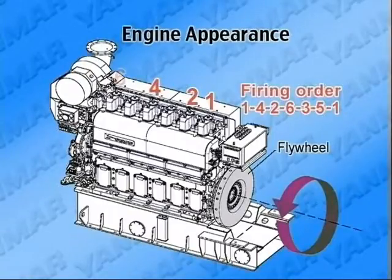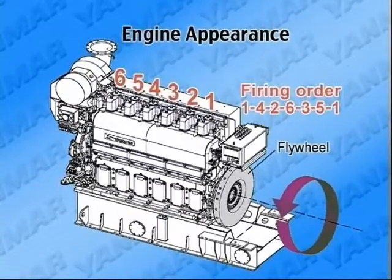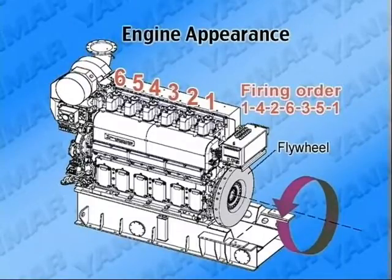Cylinders are aligned in numerical order — number one cylinder, number two cylinder — viewed from the flywheel side. The ignition order is as you are watching on the video.